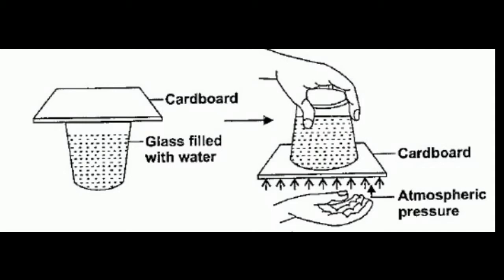To conduct this activity, we need a glass and a cardboard. We have to take the glass and fill it with water up to the brim — that means we have to fill the glass completely to the top. Then we have to place the cardboard on top of the glass. Make sure there is no air bubble or space between the water surface and the cardboard.